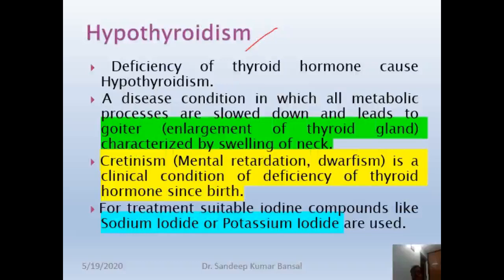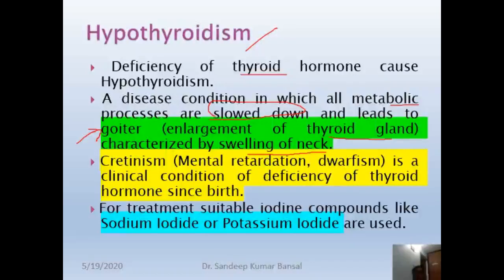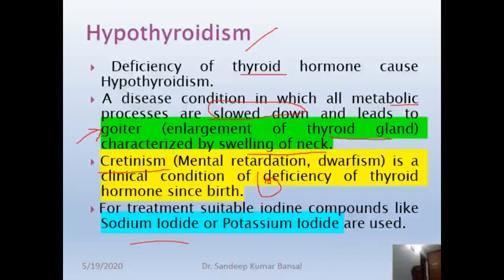Hypothyroidism is the deficiency disease of the thyroid hormone. In this disease, metabolic processes are slowed down and they lead to enlargement of the thyroid gland, known as goiter, characterized by swelling of the neck. One more disorder under hypothyroidism is cretinism, in which the person is mentally retarded and deaf, occurring since birth. For the treatment of hypothyroidism, we generally use sodium iodide or potassium iodide.